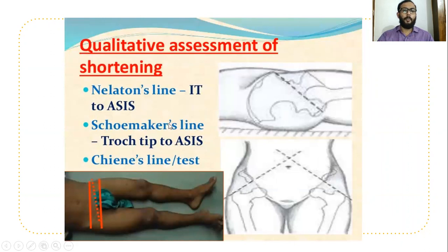The second is Schumacher's line. When that particular line is drawn from both sides, it should cross above the umbilicus or at the umbilicus at the midpoint. Whenever there is any associated fracture or dislocation, this particular line may meet below the umbilicus.